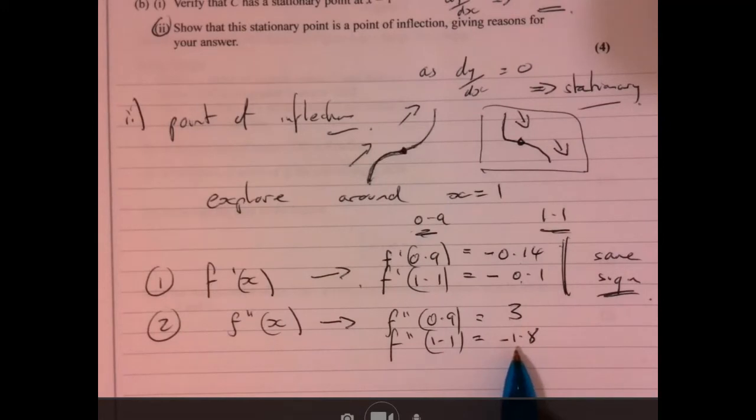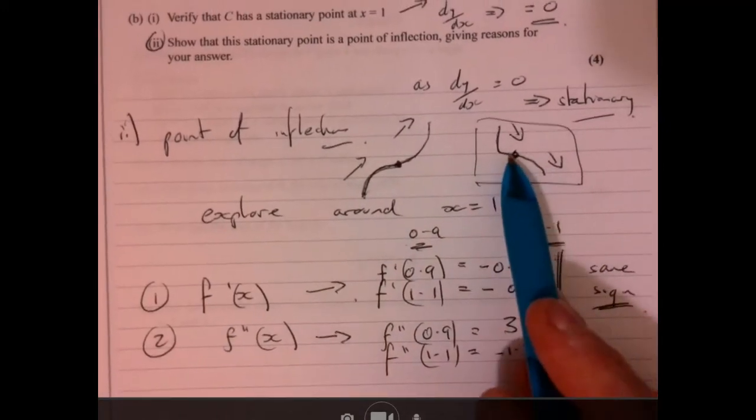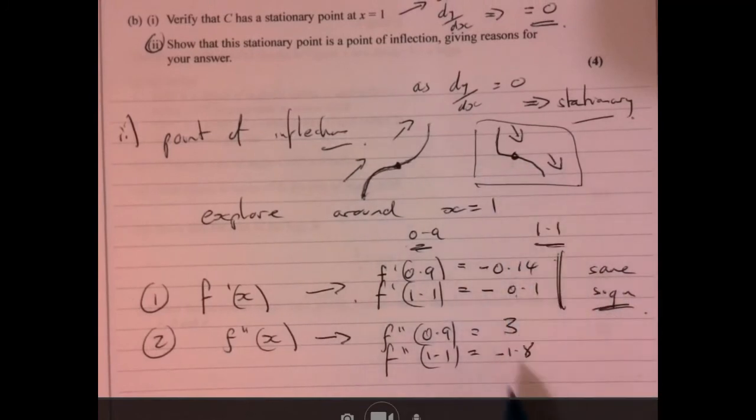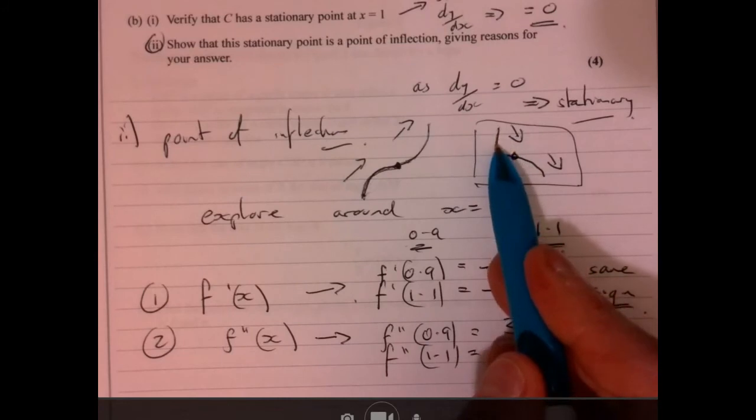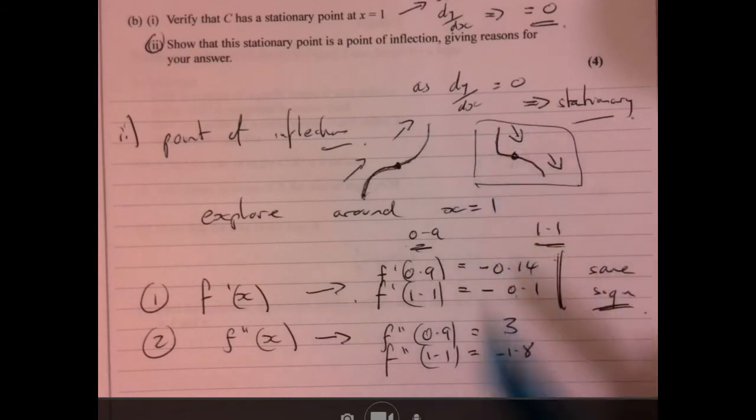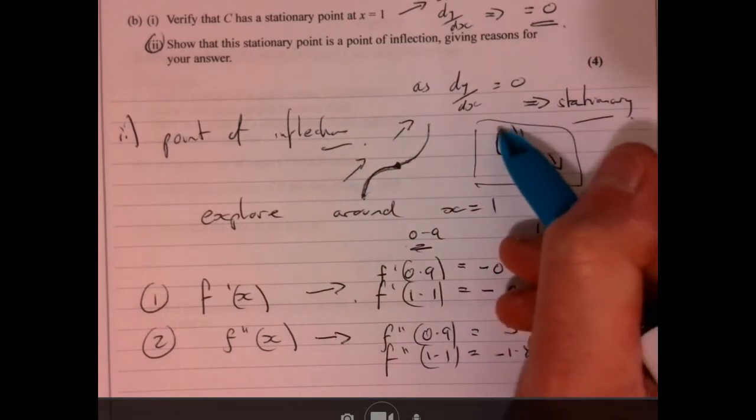Talking about change, changing in the gradient. In other words, let's just, so we, we know this has happened from here. So what's happening is through this stage the gradient is increasing. Okay, because it's going from like, it's going, starting off being big negative and then less negative.